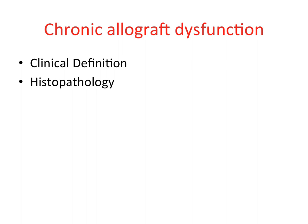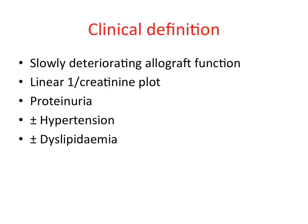So what is it? We can define chronic allograft dysfunction in clinical terms or by histopathology. The clinical definition is fairly straightforward. Typically these patients have slowly deteriorating allograft function, as demonstrated by a more or less linear reciprocal creatinine plot or eGFR plot. They almost all have proteinuria, as well as hypertension and dyslipidemia.